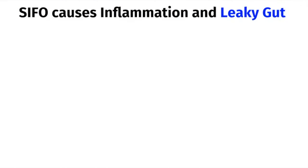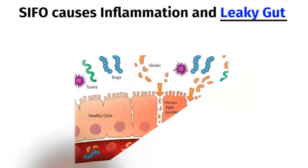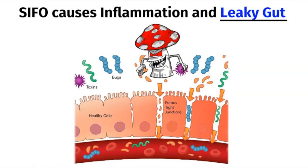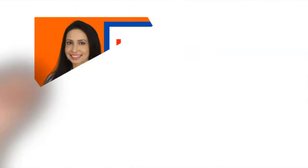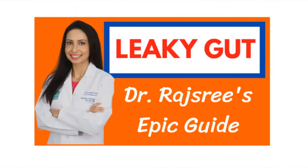SIFO can also cause inflammation and leaky gut. The lining of our intestinal tract is only one cell layer thick, and the fungal overgrowth can lead to disruption in the tight junctions between the cells, leading to abnormal intestinal permeability, also known as leaky gut. Please check out my video on leaky gut to learn more about this condition.